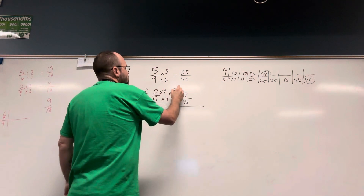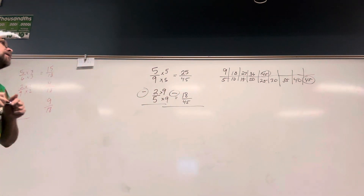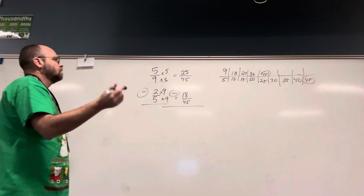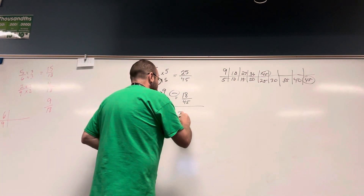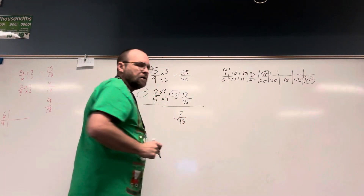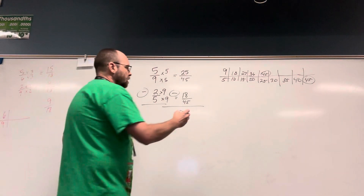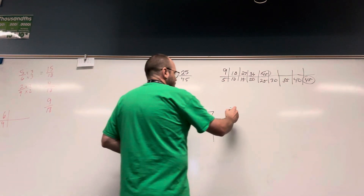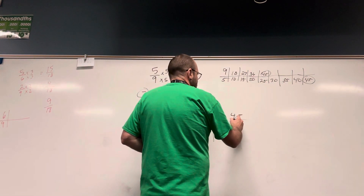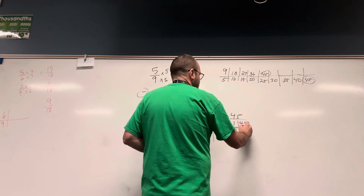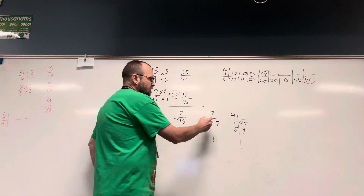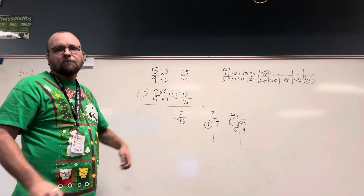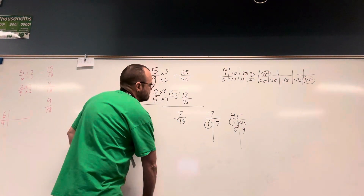It's a subtraction problem — make sure we pay attention to the sign. And 25 over 45 subtract 18 over 45 is going to give me 7 over 45. That cannot be simplified. The factors of 7 are just 1 and 7; the factors of 45 are 1, 45, 5, and 9. The only thing they have in common is 1, so I can't simplify it.